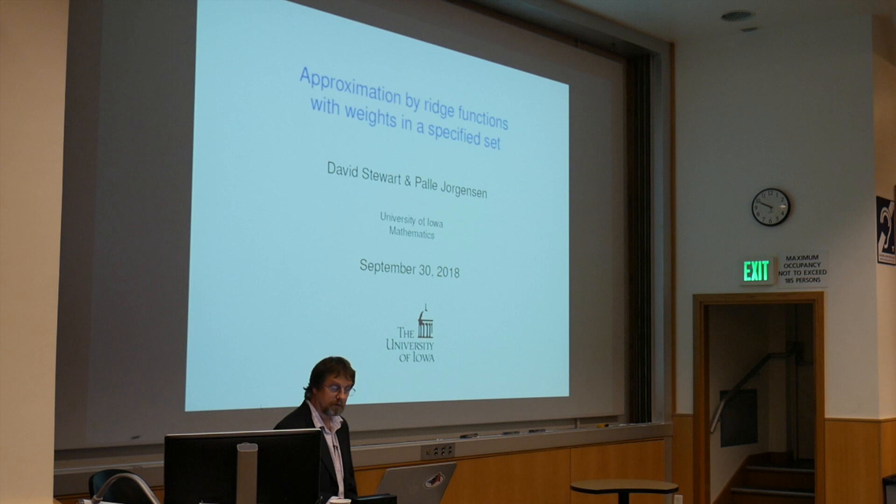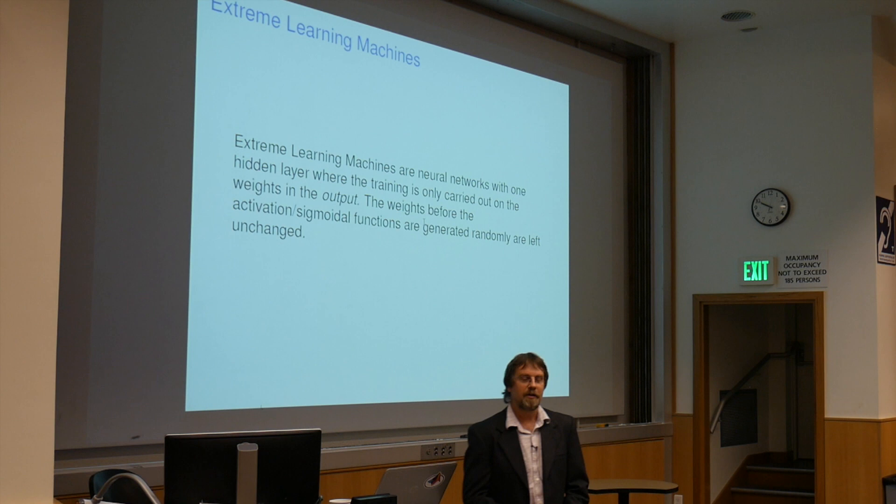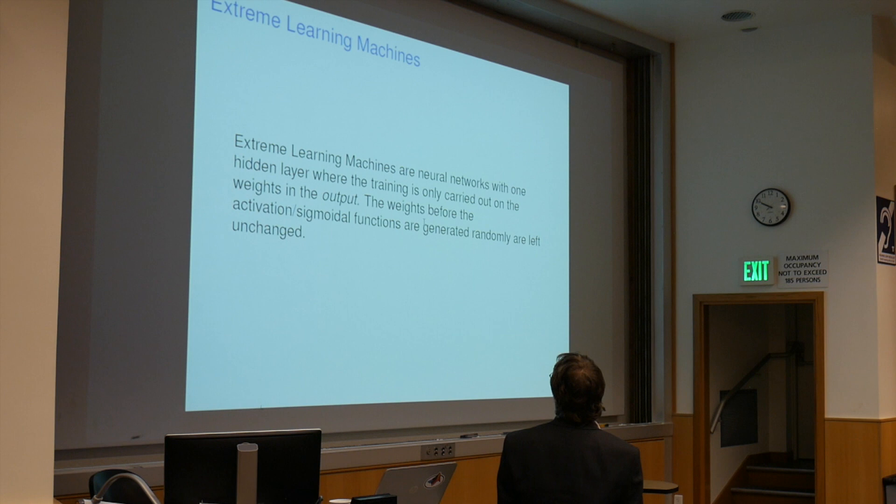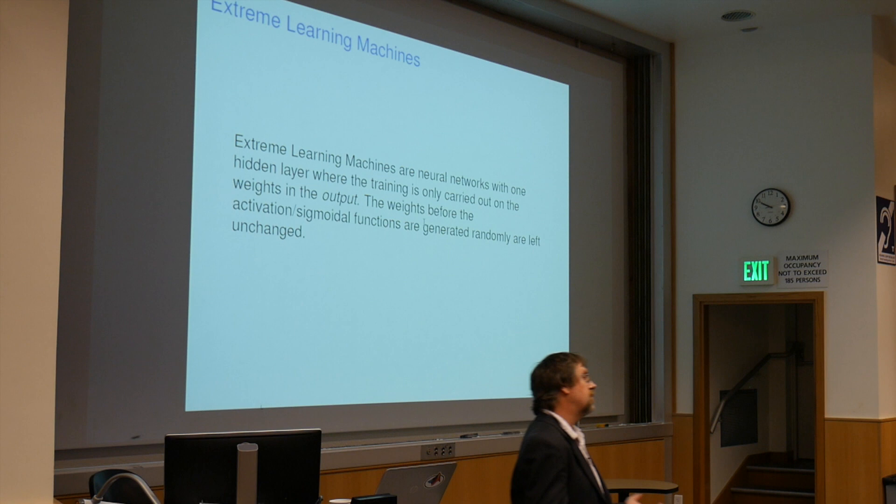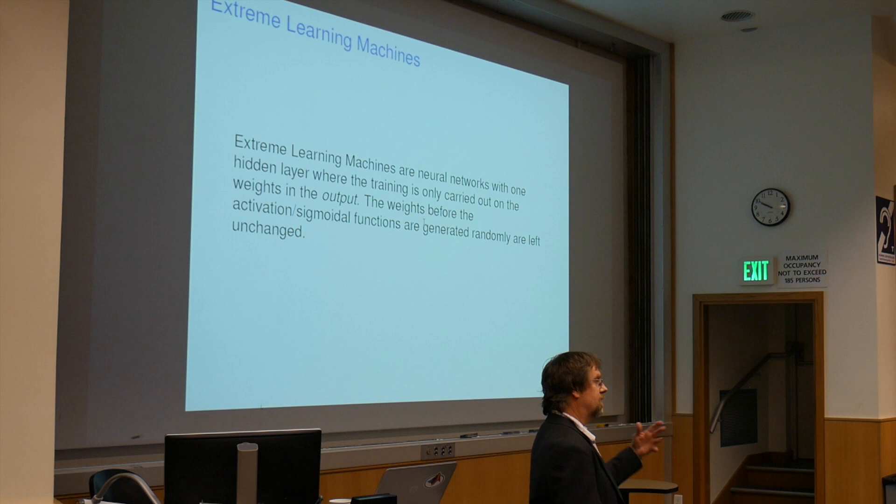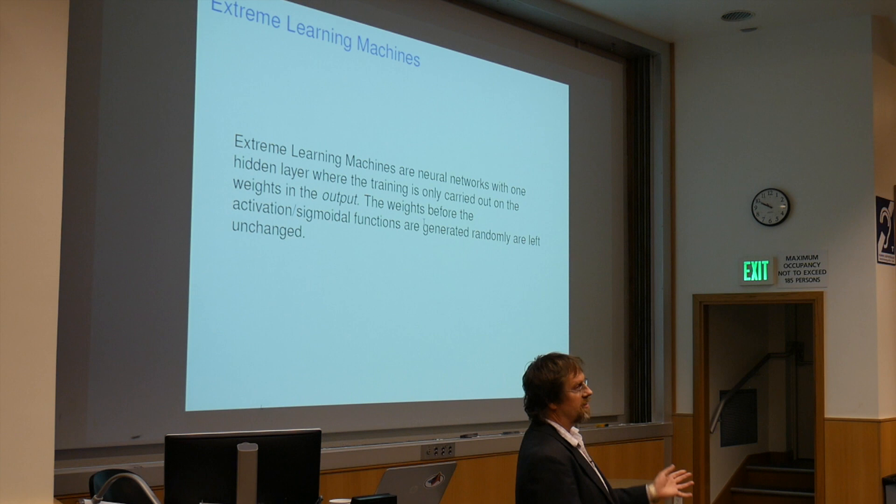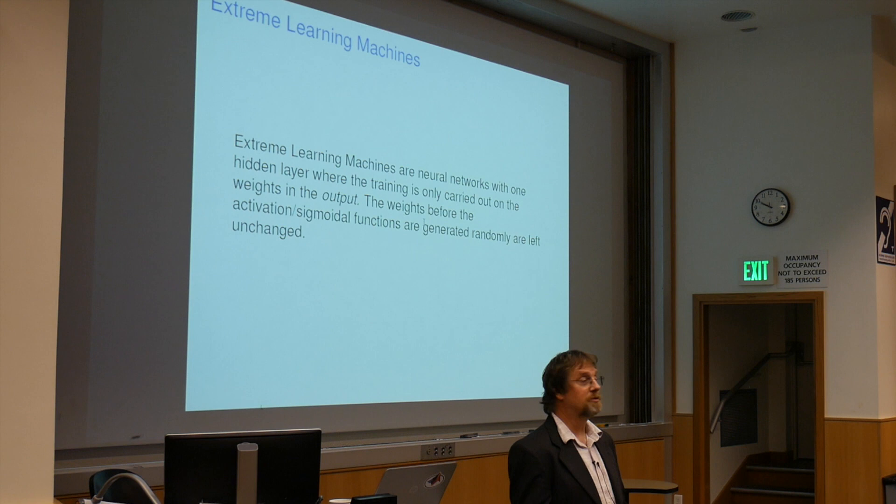I'll start with something controversial. You may or may not have heard of extreme learning machines. These are simply neural networks where you just generate the weights on the side before the activation functions and just train on the weights on the other side. The nice thing is it results in a least squares problem - that's all your optimization, all your training is, apart from generating the weights before the activation function.